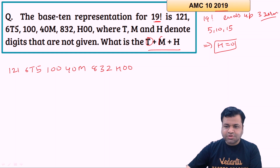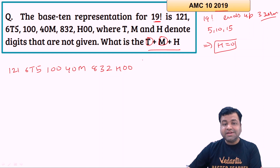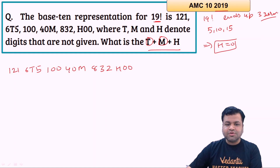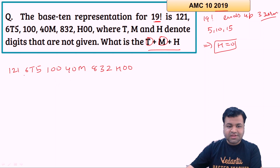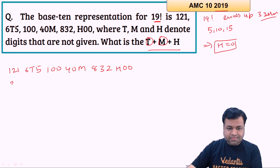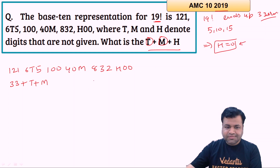Now we need to find t and m, and for that we need two equations since t and m are two unknowns. We know the divisibility rules of 9 and 11 because those involve sums and differences of t and m. The divisibility rule of 9 says the sum of digits must be divisible by 9. Let's find the sum of digits: that comes out to 2+1+3+1+4+6+5+20 = 33, and since h is zero we don't add h. So 33 plus t plus m must be divisible by 9.